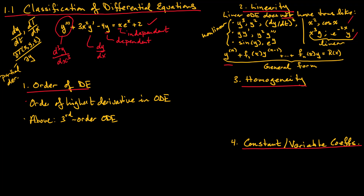Looking at this general form, we move to the next classification: homogeneity. An ODE is homogeneous if R(x) is equal to zero. As you can imagine, it is non-homogeneous if R(x) is not equal to zero. Again, homogeneity will dictate how we solve a given differential equation.